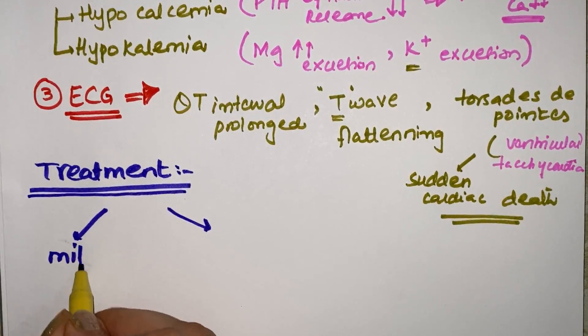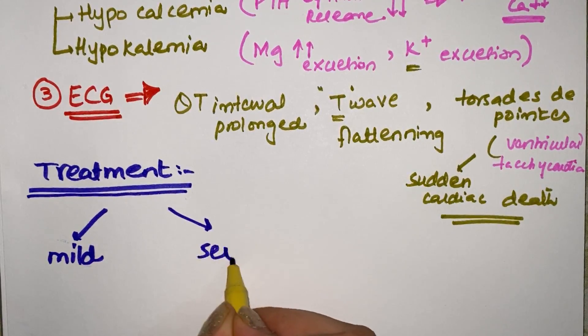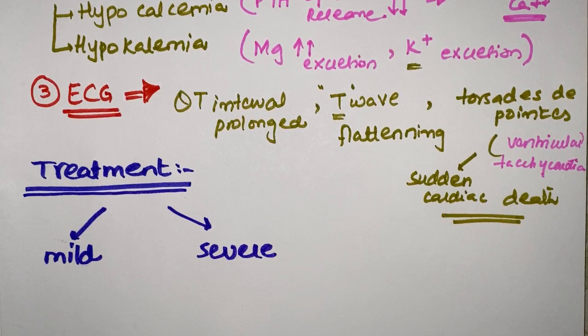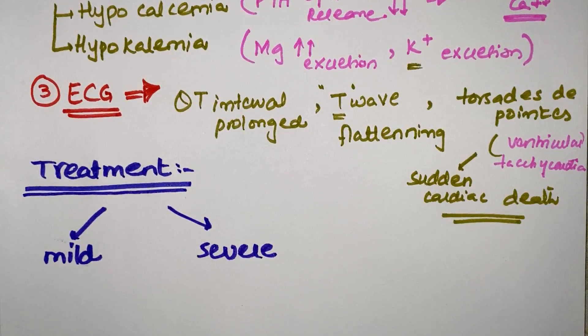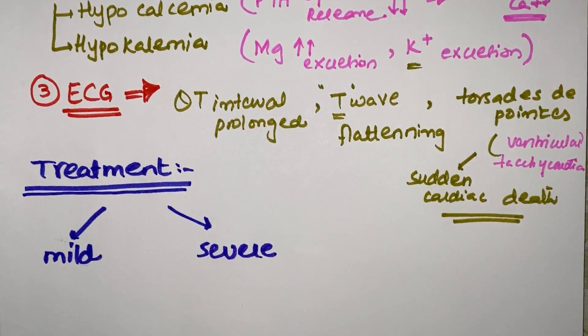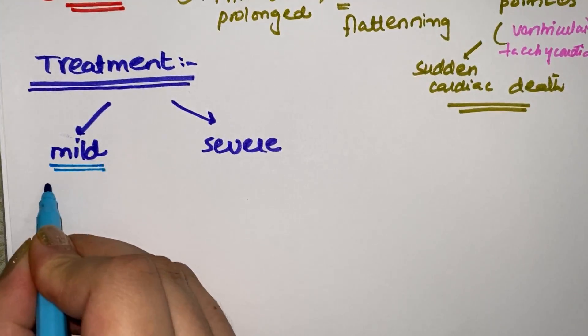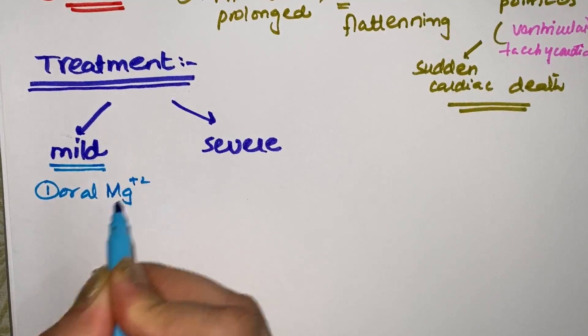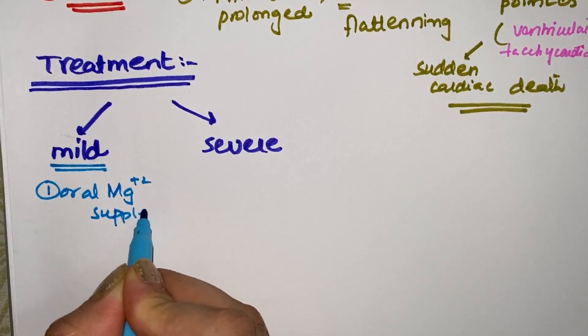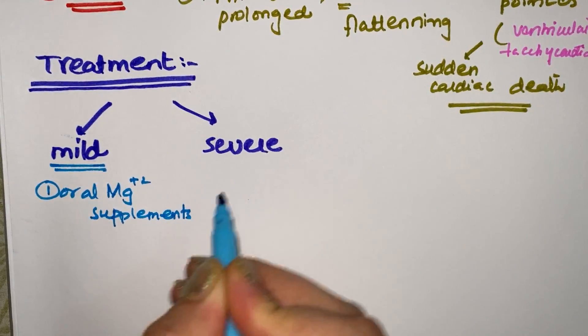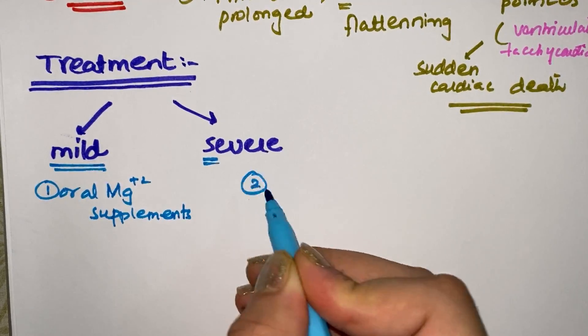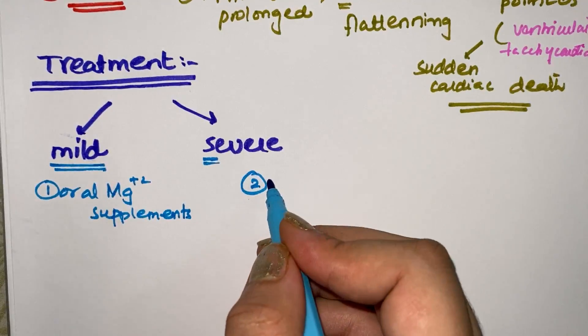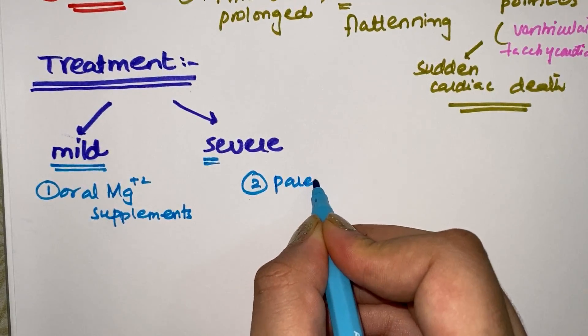Whether it's mild hypomagnesemia or severe hypomagnesemia. Whenever there is a mild disease, we prefer giving oral supplementation to the patient. So we give oral magnesium supplements. Whenever it's a severe state, we want rapid results to save the life of the patient, so we give parenteral magnesium supplements.